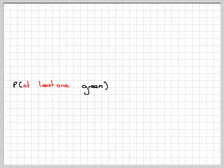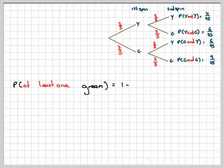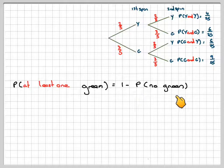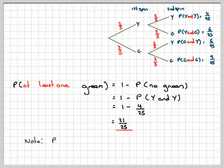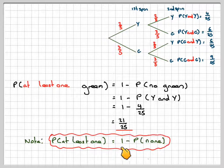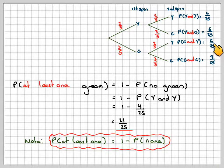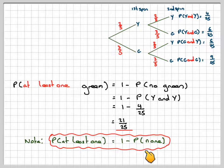And the probability of at least one green. Since all the probabilities add up to one, we can find this by doing one minus the probability of no green. So that's one minus the probability of getting a yellow and a yellow, which is one minus four out of 25, giving 21 out of 25. In general, the probability of at least one thing happening equals one minus the probability that none happened. We could also add the three outcomes directly: six plus six plus nine equals 21. But the complement technique of one minus the probability of none is much more efficient, particularly with a bigger tree diagram.